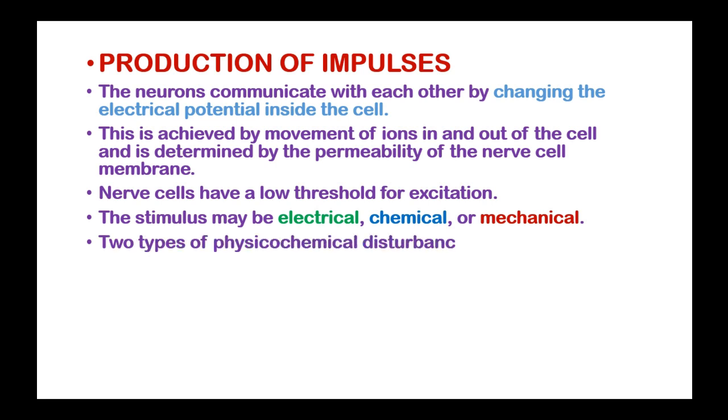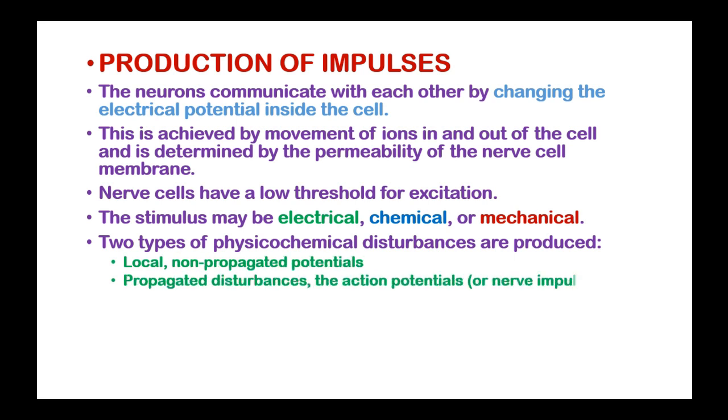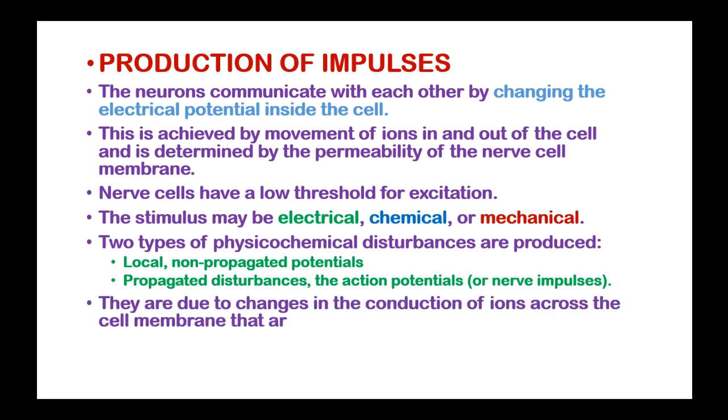We have two types of physical chemical disturbances which are produced: the local or non-propagated potentials, and the propagated disturbances, which are known as action potentials or nerve impulses. They are due to changes in the conduction of ions across the cell membranes that are produced by alteration in ion channels.